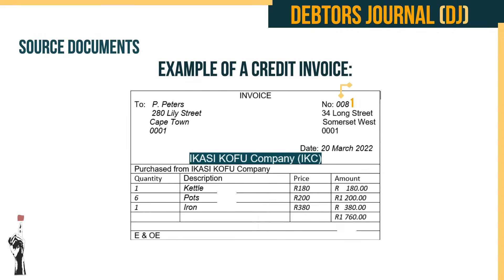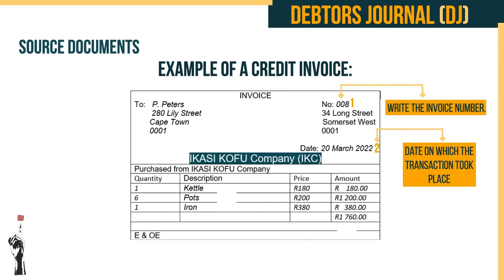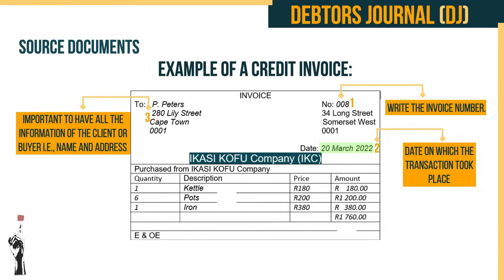Let's look at an example of a credit invoice. Number one: write the invoice number. Number two: write the date on which the transaction took place — in this case it was the 20th of March. Number three: it is also important to have all the information of the client or buyer, their name and address.